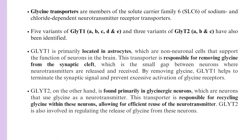Glycine Transporter 2, on the other hand, is found primarily in glycinergic neurons — neurons that use glycine as a neurotransmitter. This transporter is responsible for recycling glycine within these neurons, allowing for efficient reuse of the neurotransmitter. Glycine Transporter 2 is also involved in regulating the release of glycine from these neurons.